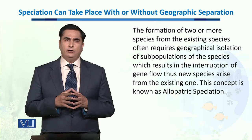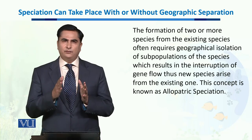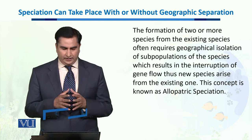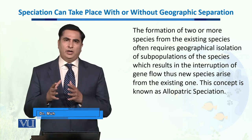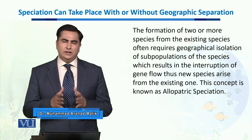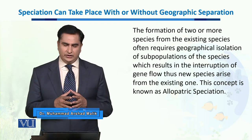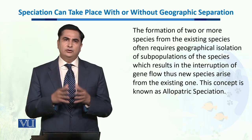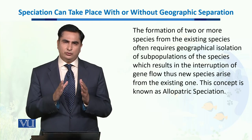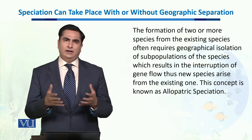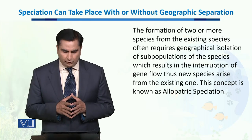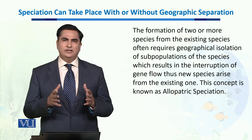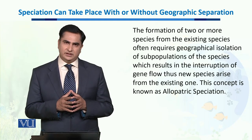The formation of two or more species from one existing species often requires geographical isolation of a subpopulation. Due to this geographical isolation, gene flow stops and two different species result from this geographic isolation. This concept is known as allopatric speciation.